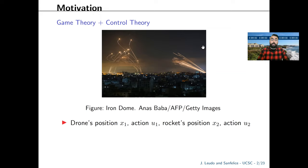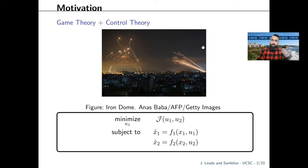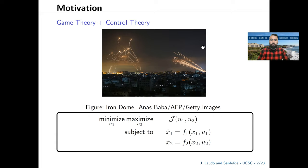By denoting the drone's position by x1, its action by u1, the rocket's position by x2, and its action by u2, we can model this problem as an optimization problem with dynamic constraints. The challenge from the drone's perspective is that the rocket's strategy isn't known, so we can model this as a minimization problem by the action of the drone intending to minimize a cost J subject to the dynamics of each system. But to model what strategy the rocket can play, we will turn this into a min-max problem, and this is what we'll focus on.